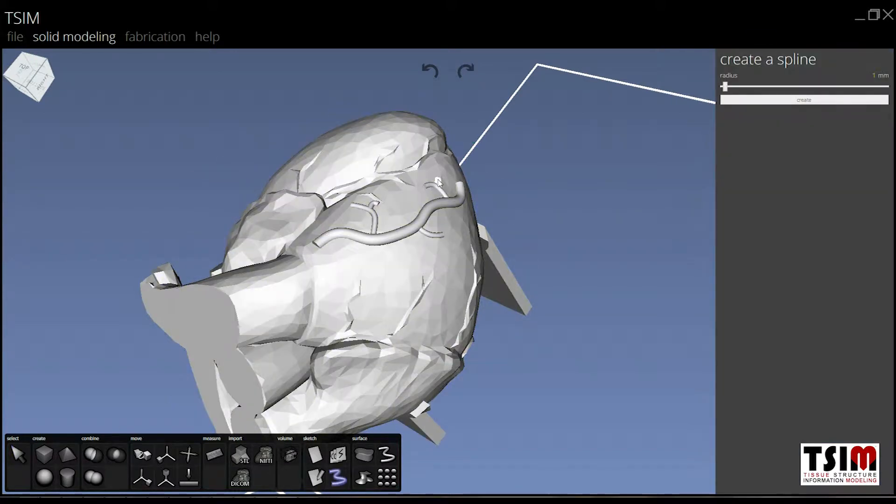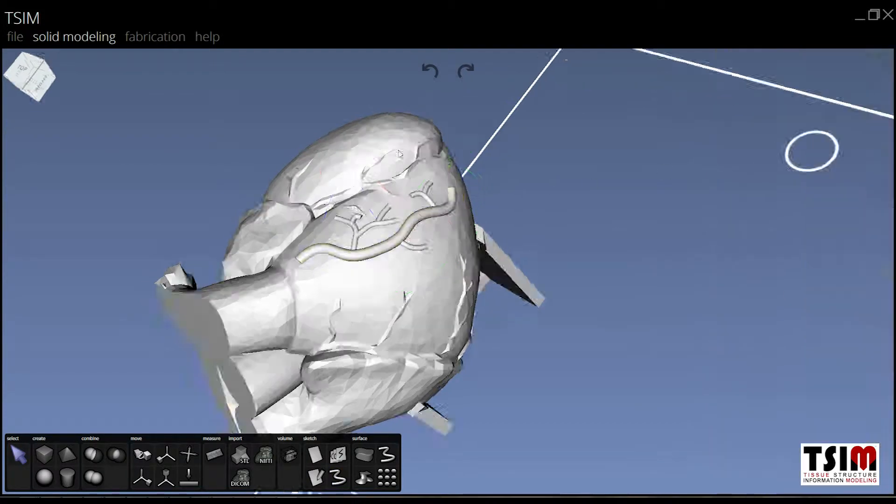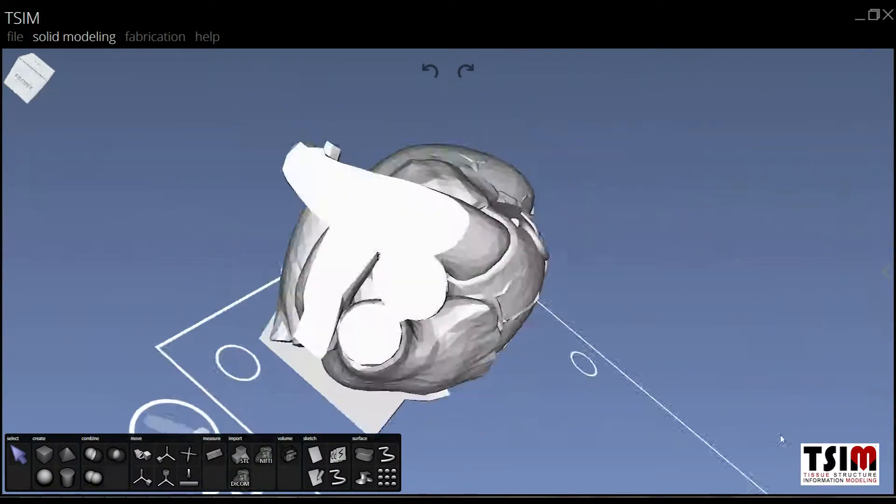Once constructed in TSIM, the model, including the added vascular tree, is then sent over to the BioAssemblyBot.